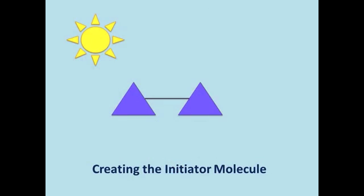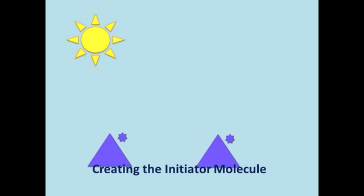The initiator molecule is created when light energy breaks a relatively unstable bond within a molecule. This reaction results in two free radicals. Each free radical possesses one free electron from the original bond that was broken. The species are highly unstable and reactive.